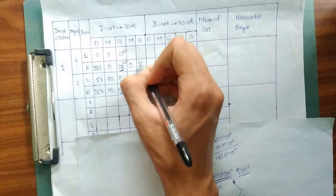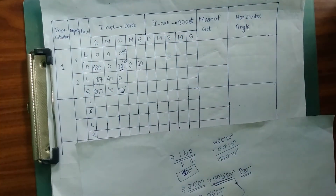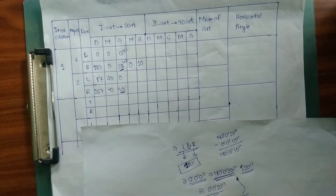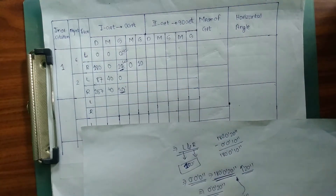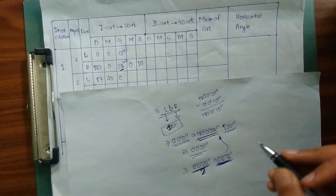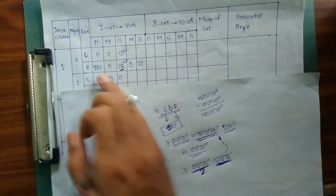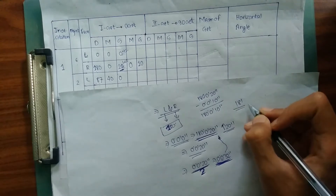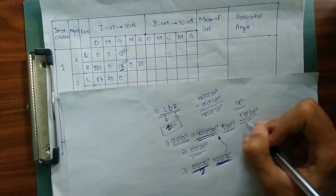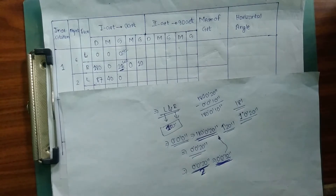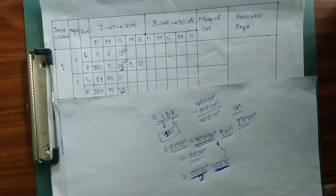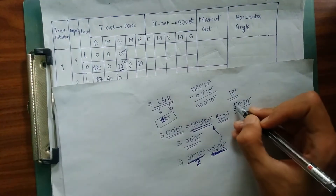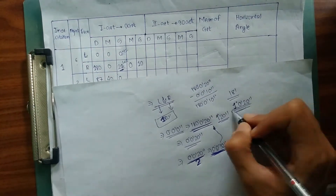One important point: while sighting with the theodolite and measuring horizontal angles, the error must be in minutes and seconds only — it cannot be in degrees. If I had an error such as 181 degrees, the error would be one degree, which is not acceptable. We need our error only in minutes and seconds to apply this correction. If the error was in degrees, we would have to redo the sighting in the field.